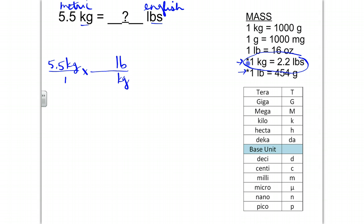Then I'm going to use my conversion factor, one kilogram is equal to 2.2 pounds. And then I'm done with my setup. My kilograms are going to cancel, leaving me with pounds as the unit on my final answer.